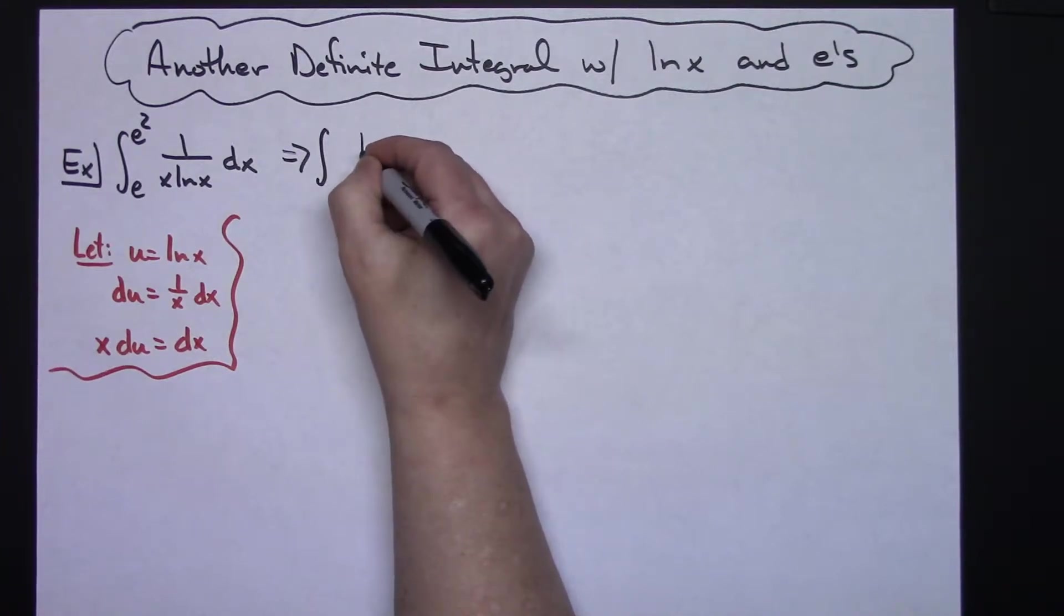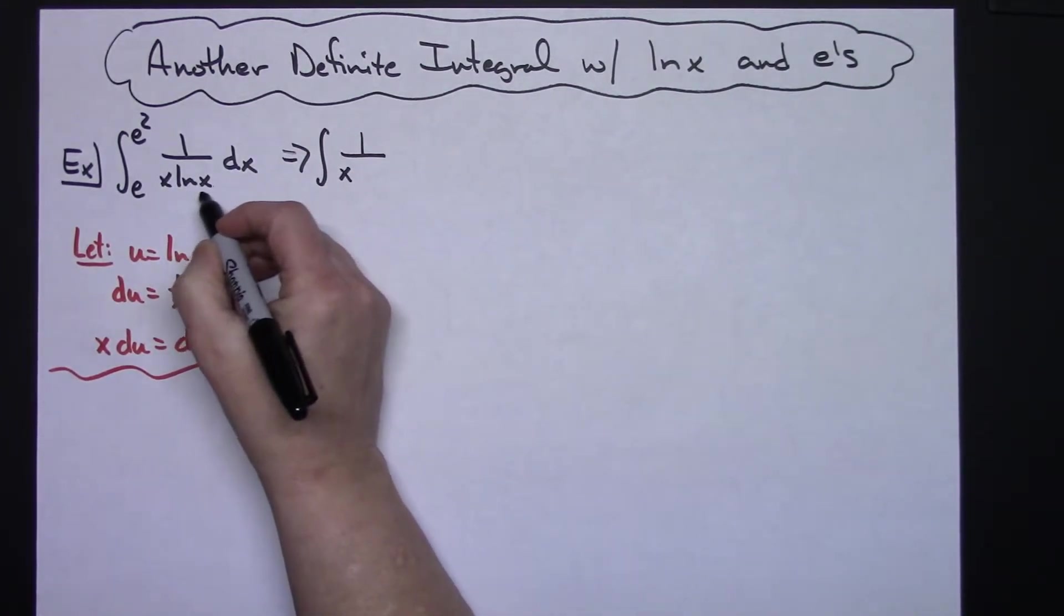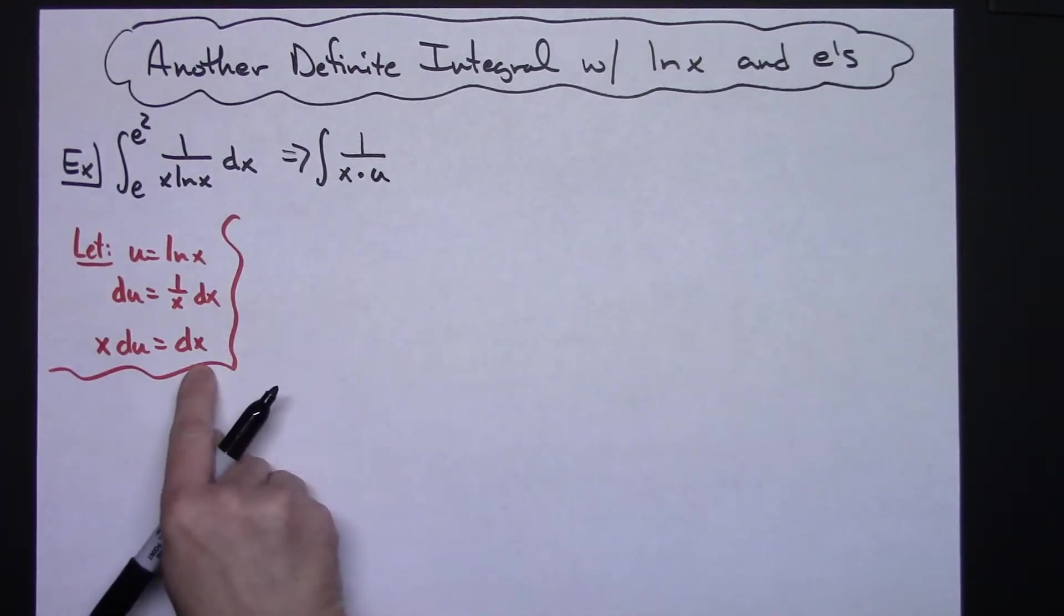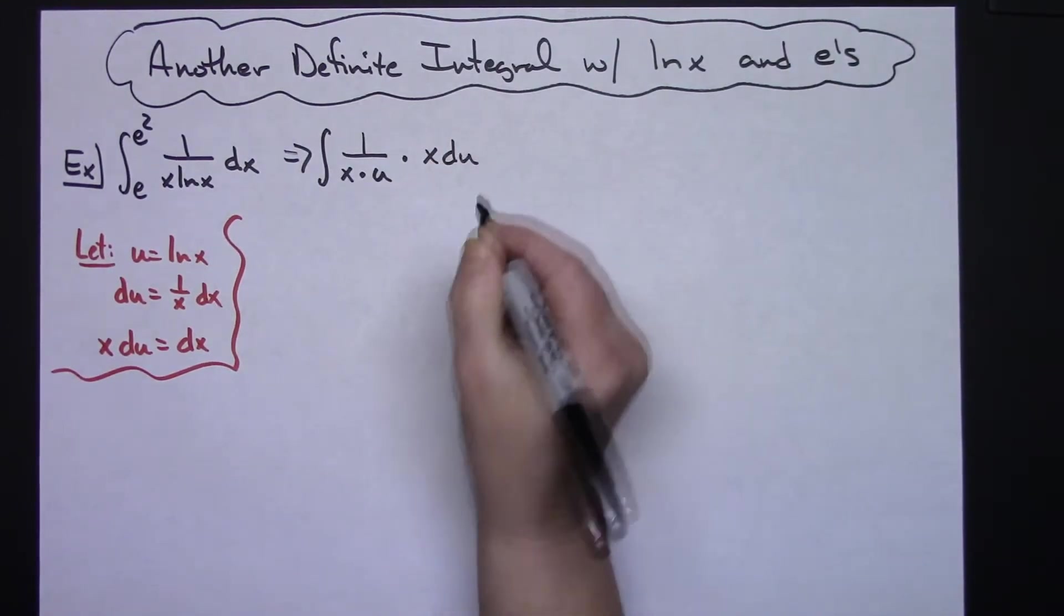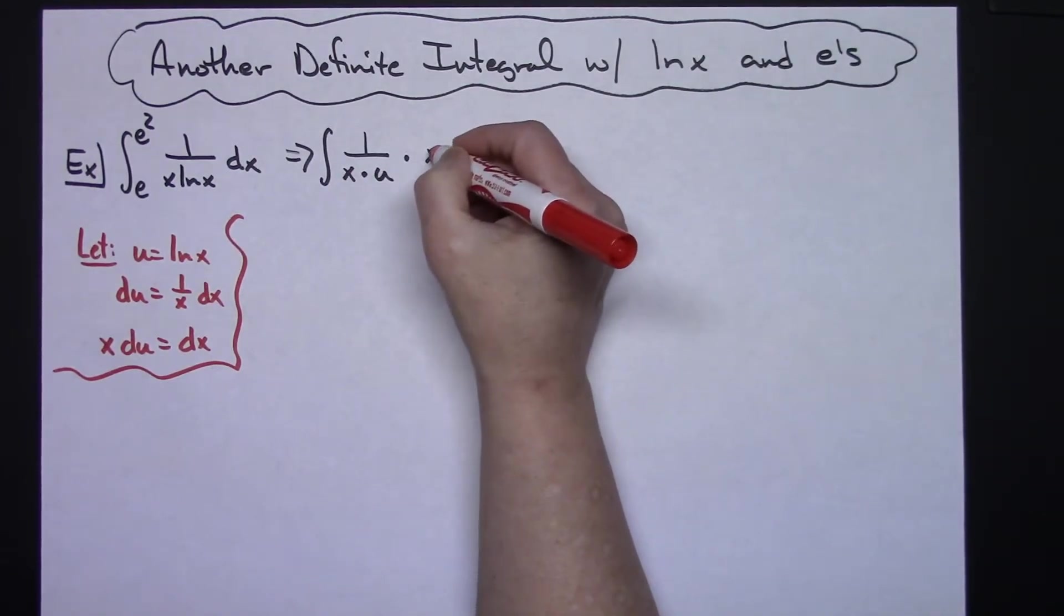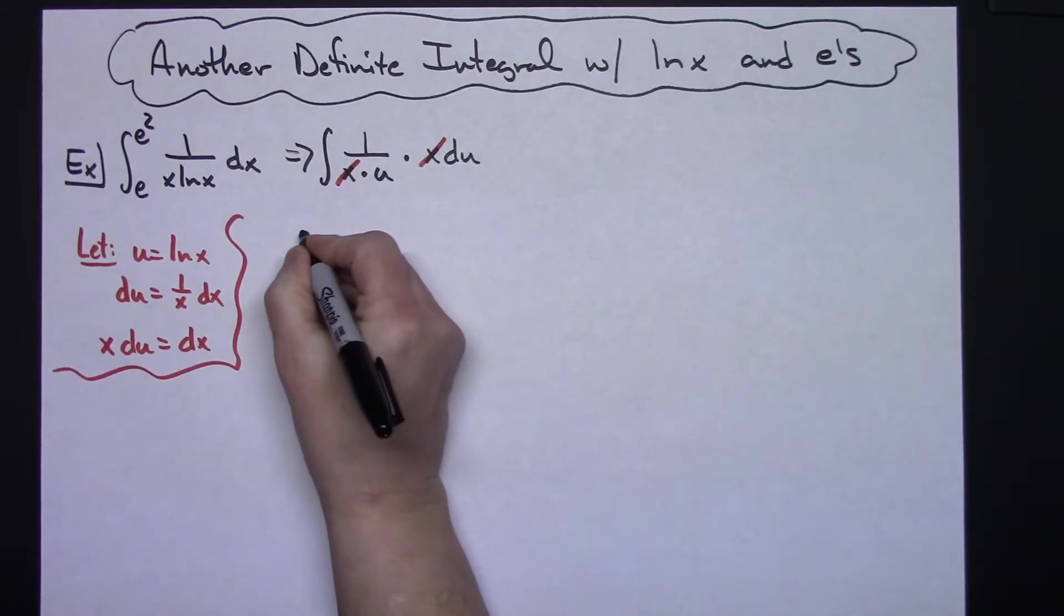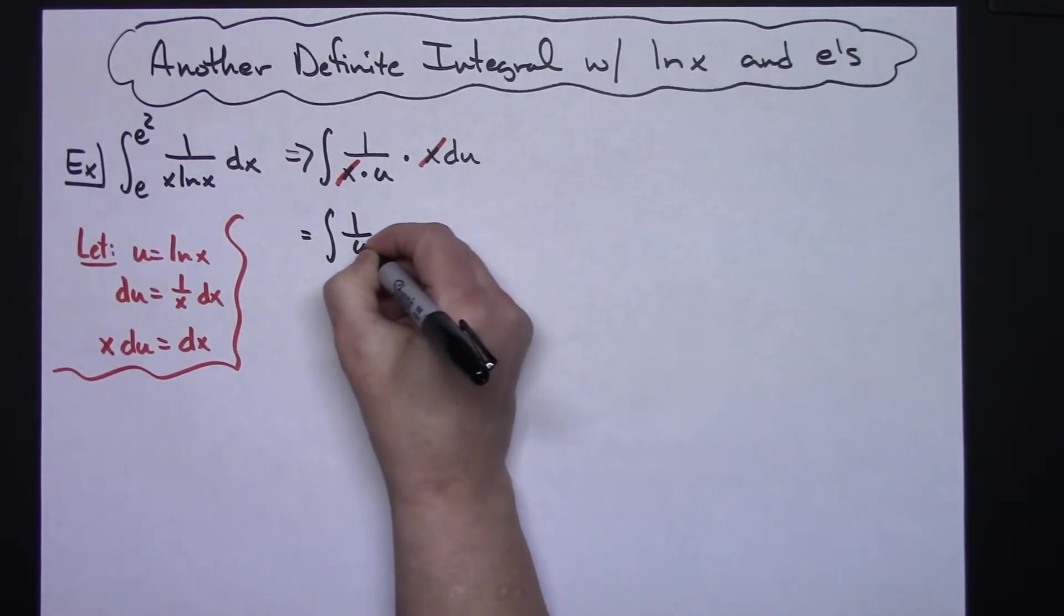I'm going to have my 1, the x stays there, I'm going to replace the natural log of x with u, and replace the dx with x du. My x's cross out, so this is going to leave me with the integral of 1 over u du.